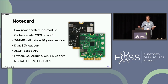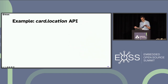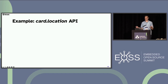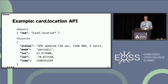We have SDKs for all the major languages and RTOSs. On the cellular side, we work with NB-IoT, LTE-M, and Cat-1. Everything is JSON in and JSON out with the Notecard. For example, if you want to get your Notecard's GPS location, you use the card.location API — just a JSON-formatted request. The response is a JSON-formatted response with metadata that includes your location. Most of the API is set up very similarly — very intuitive.